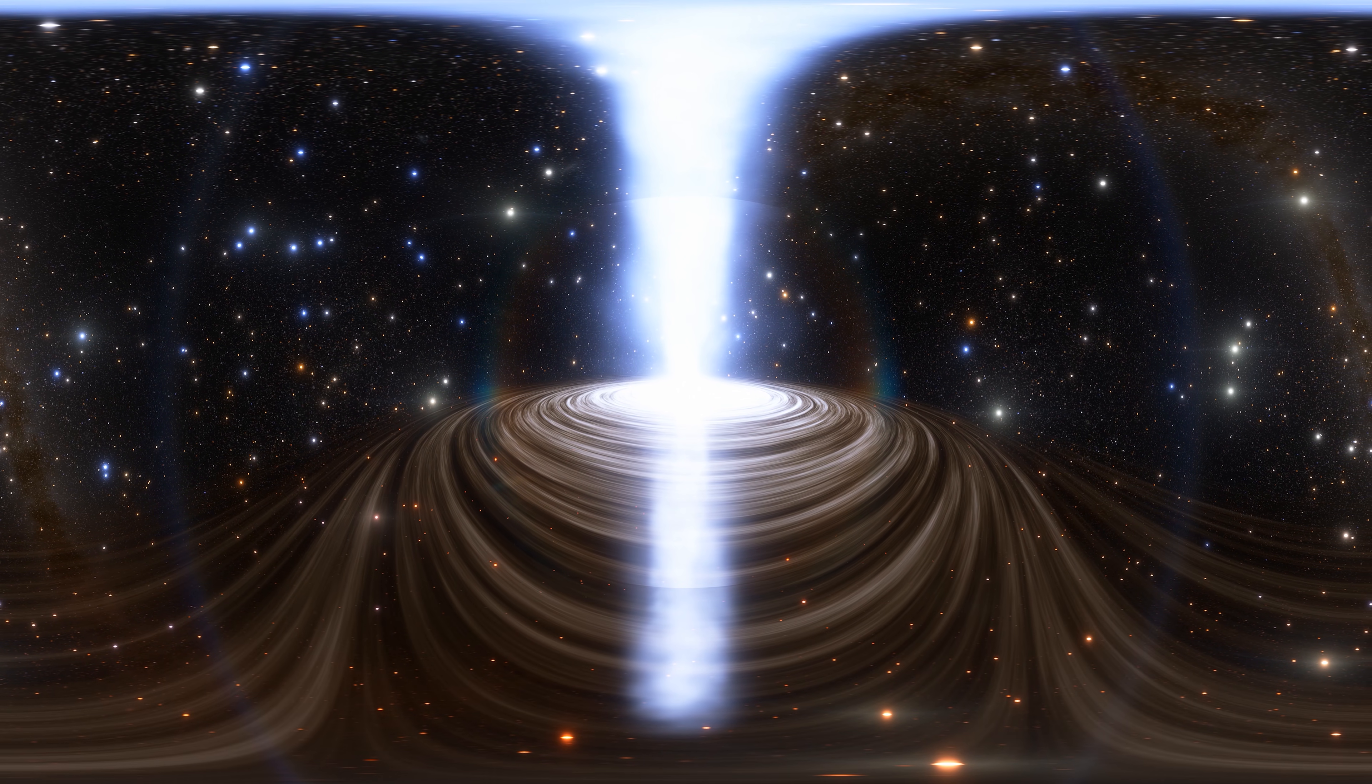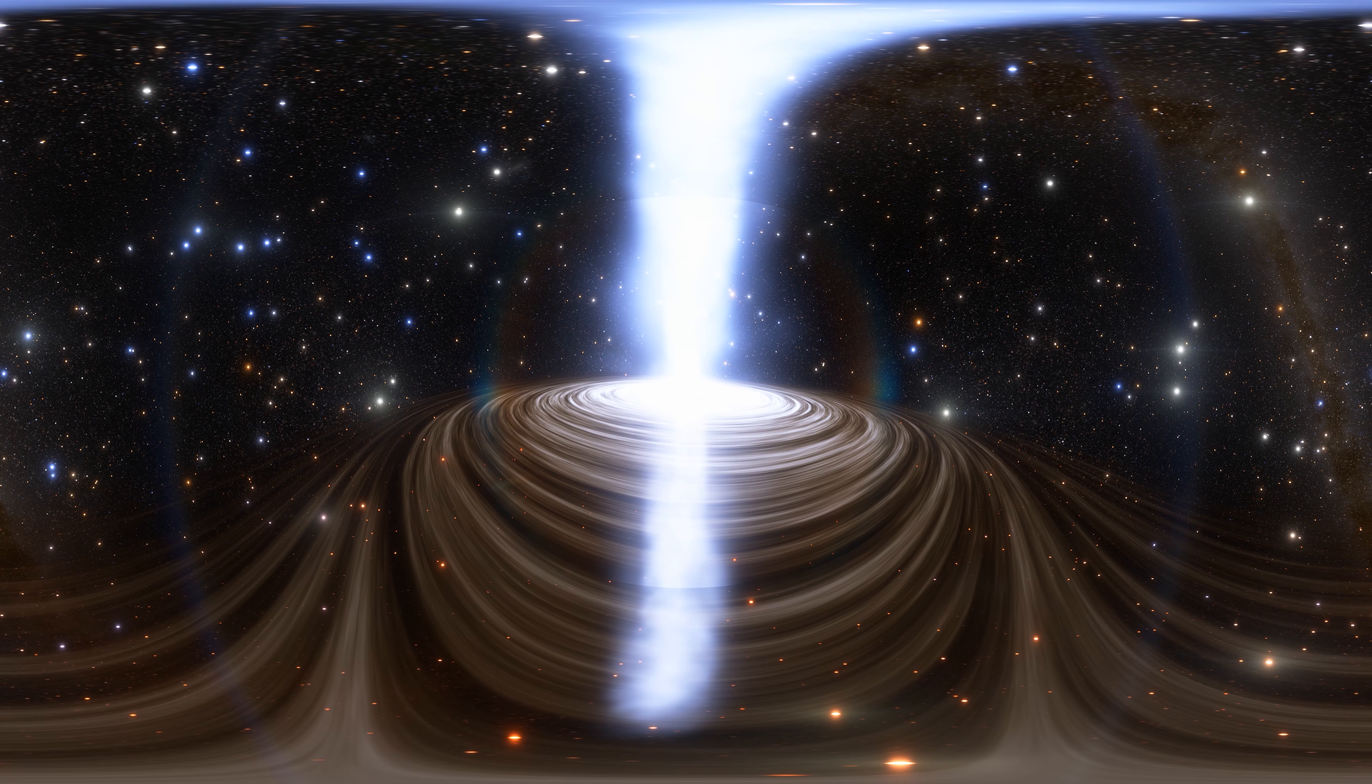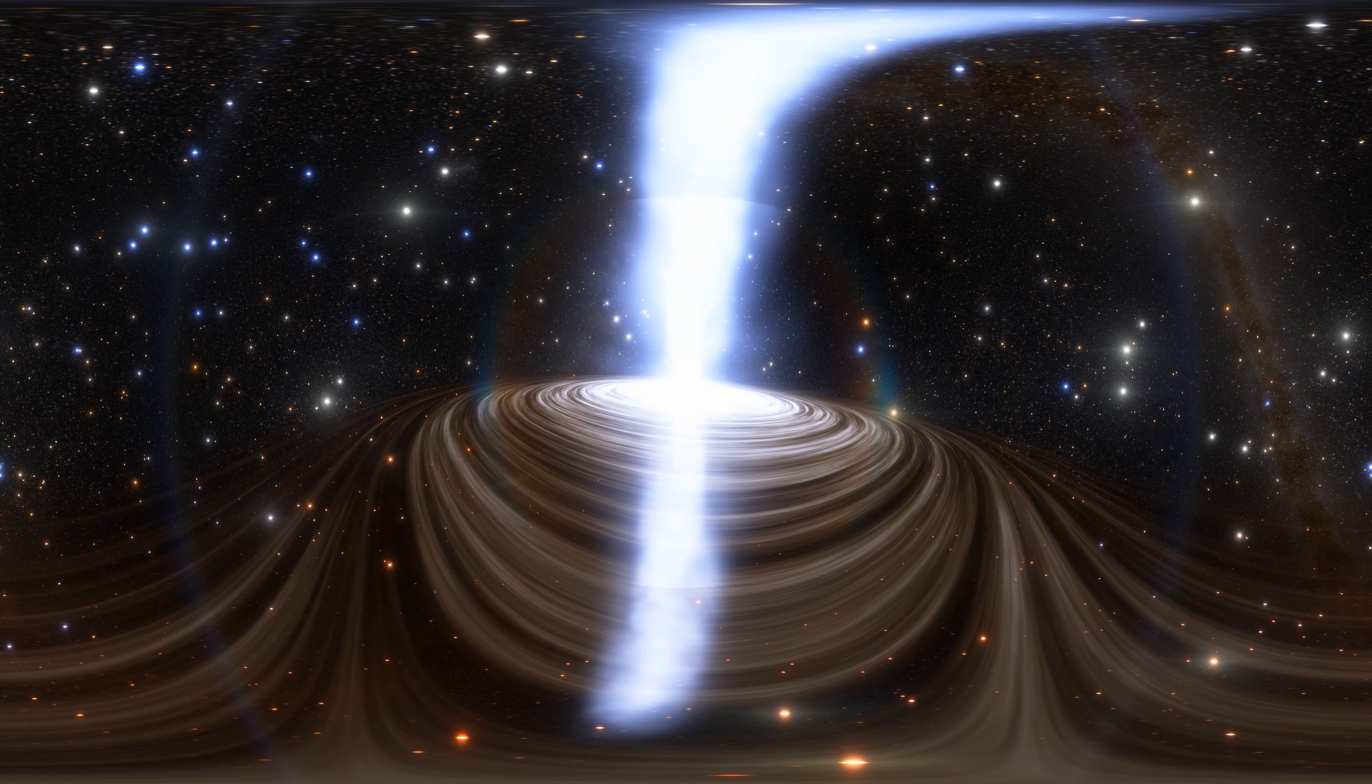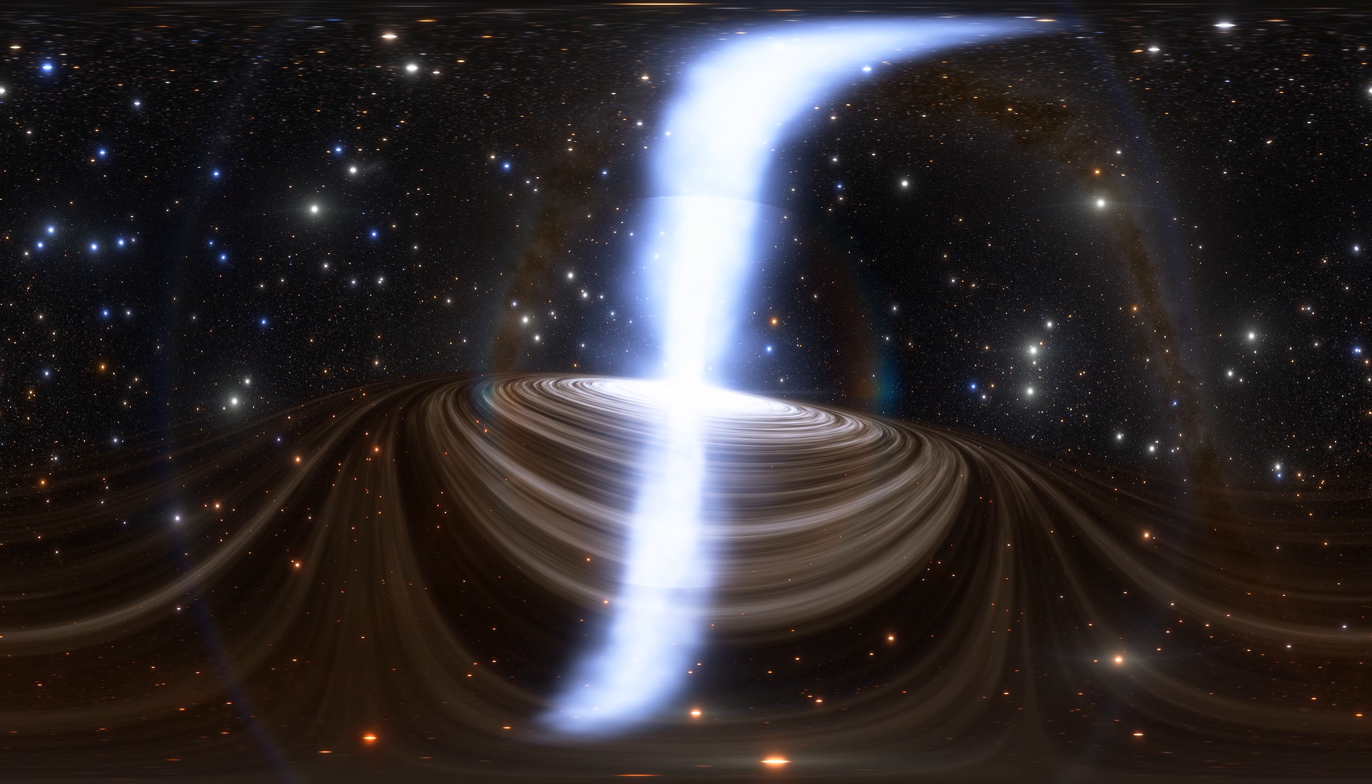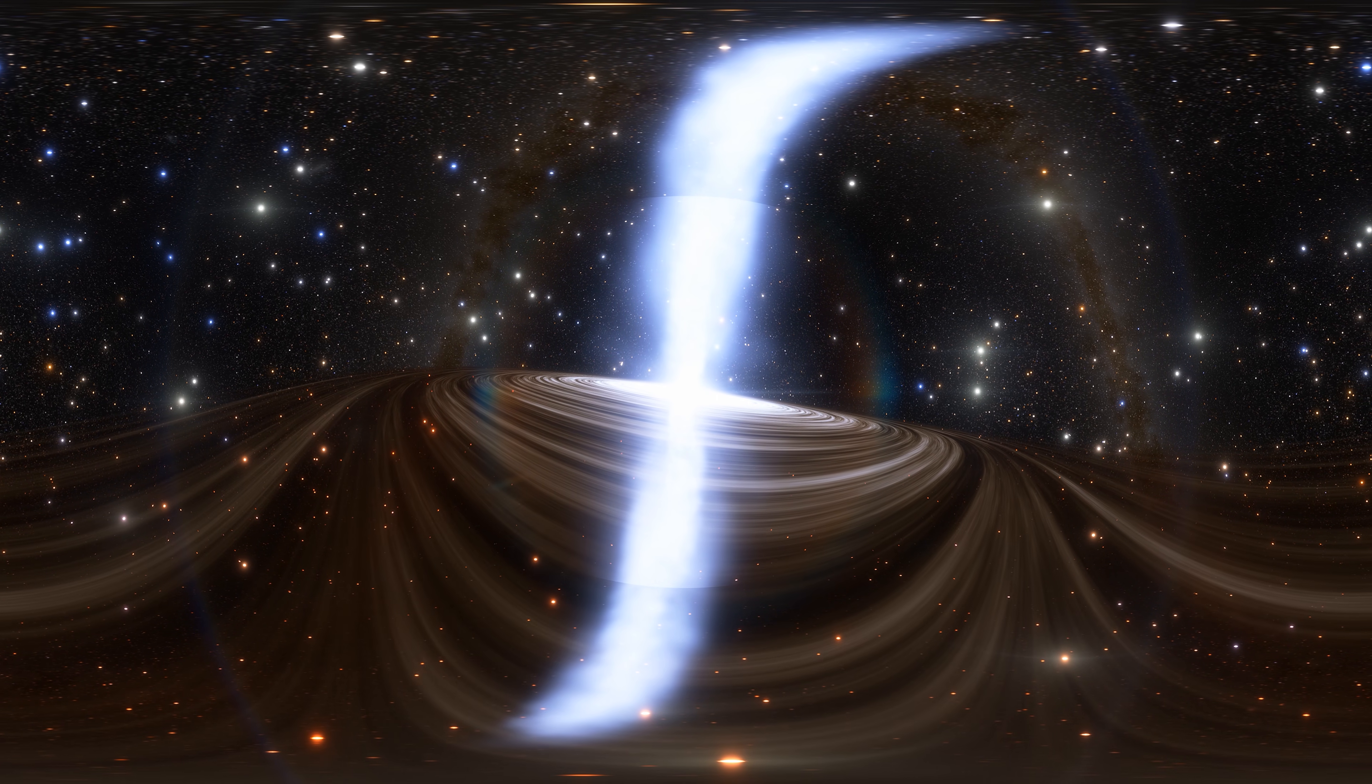Observations of several stars orbiting Sagittarius A, particularly star S2, have been used to determine the mass and upper limits on the radius of the object. Based on mass and increasingly precise radius limits, astronomers have concluded that Sagittarius A is the Milky Way's central supermassive black hole.